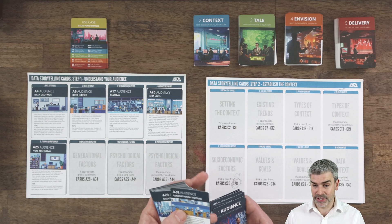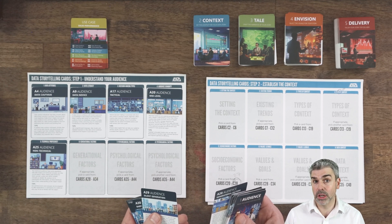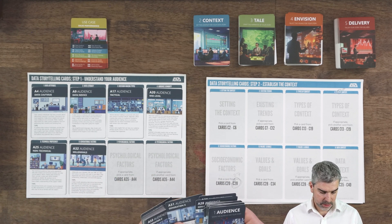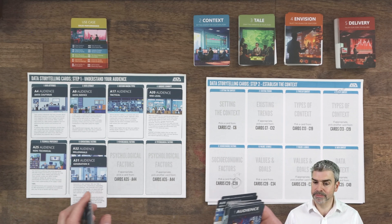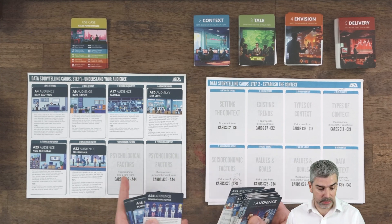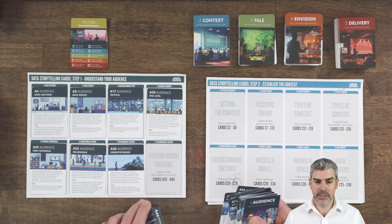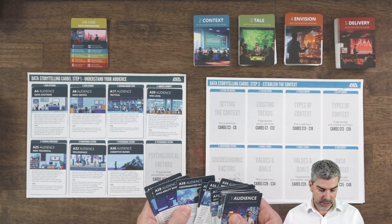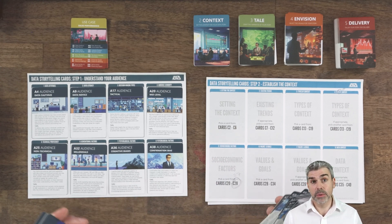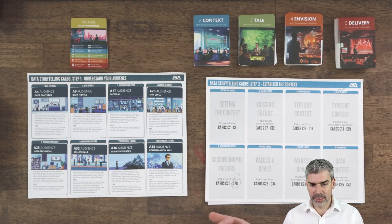There are also generational factors to consider based on age. You may have more than one card here. For these folks, we're thinking they're more millennials, possibly with a few Gen X people in there. Psychological factors are next — you could have several. There might be some cognitive bias to address. Do people have preconceived notions? Maybe they have confirmation bias or availability bias. These cards always give tips on how to address those biases. That completes our audience section.